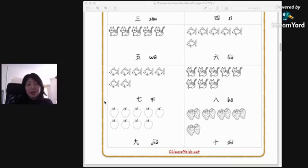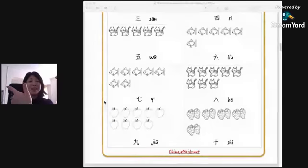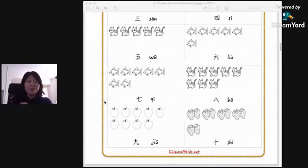Pay attention to bā especially, because the gesture looks like two in English. There's a joke: one person went to a bar in China and couldn't speak Chinese. He wanted a cup of beer, and when asked how many he wanted, he made this sign. To his surprise, eight bottles of beer were brought to him, because this means bā in Chinese - eight instead of two.